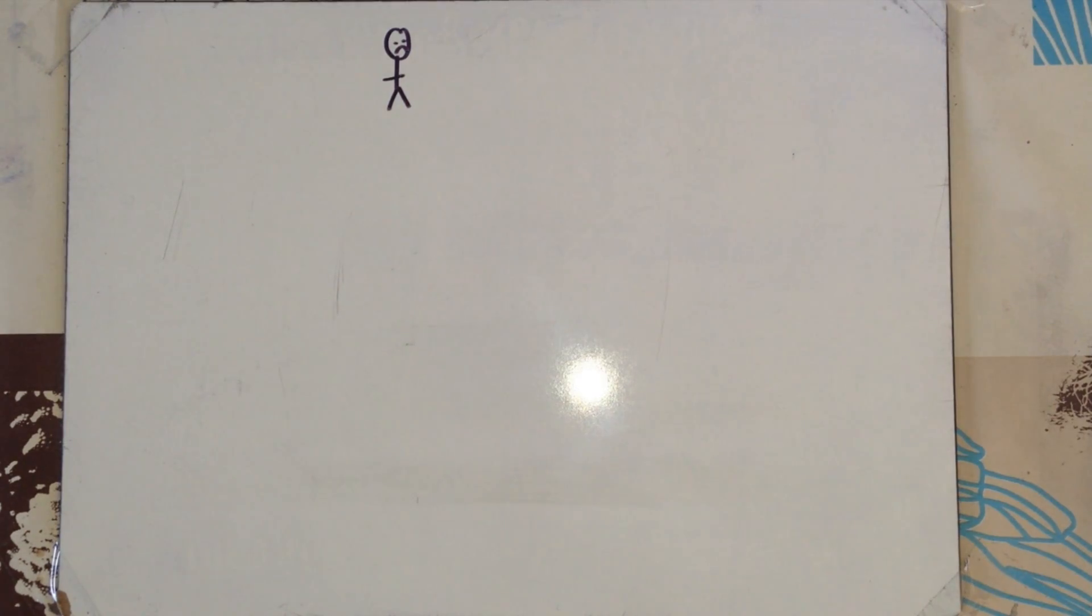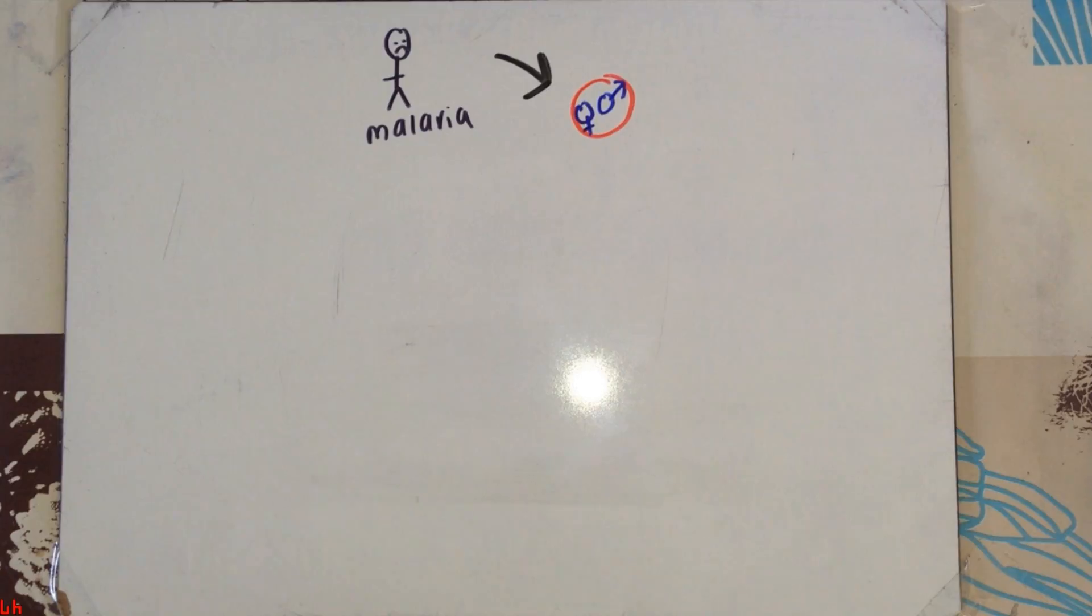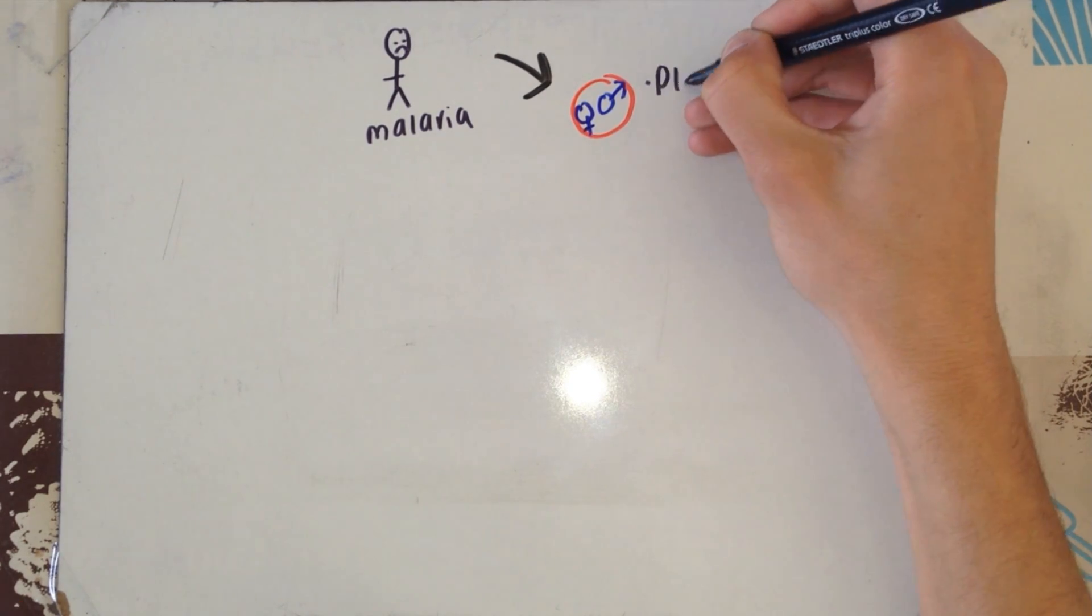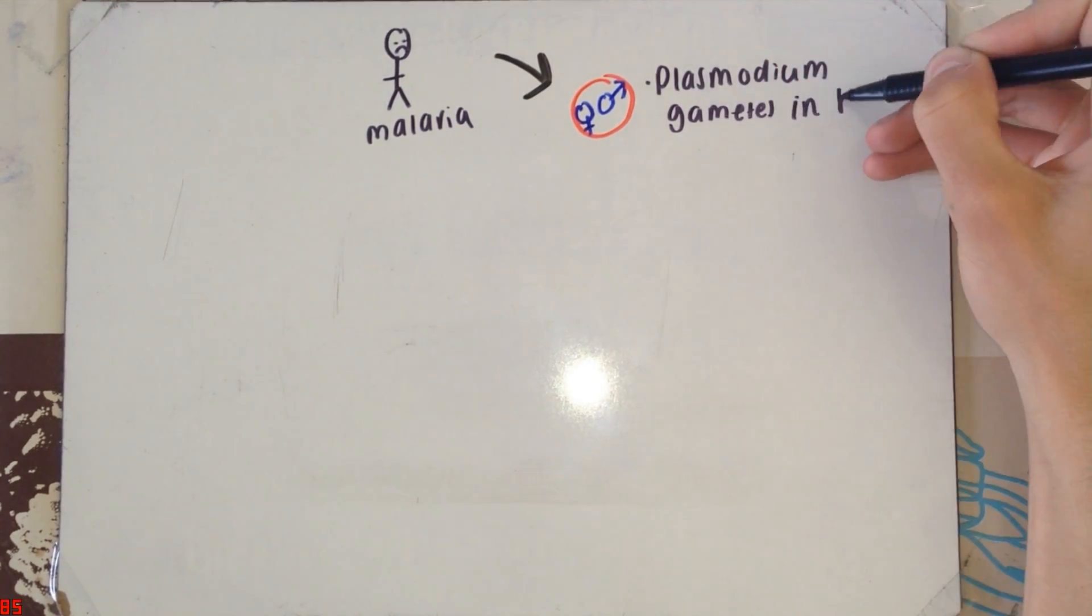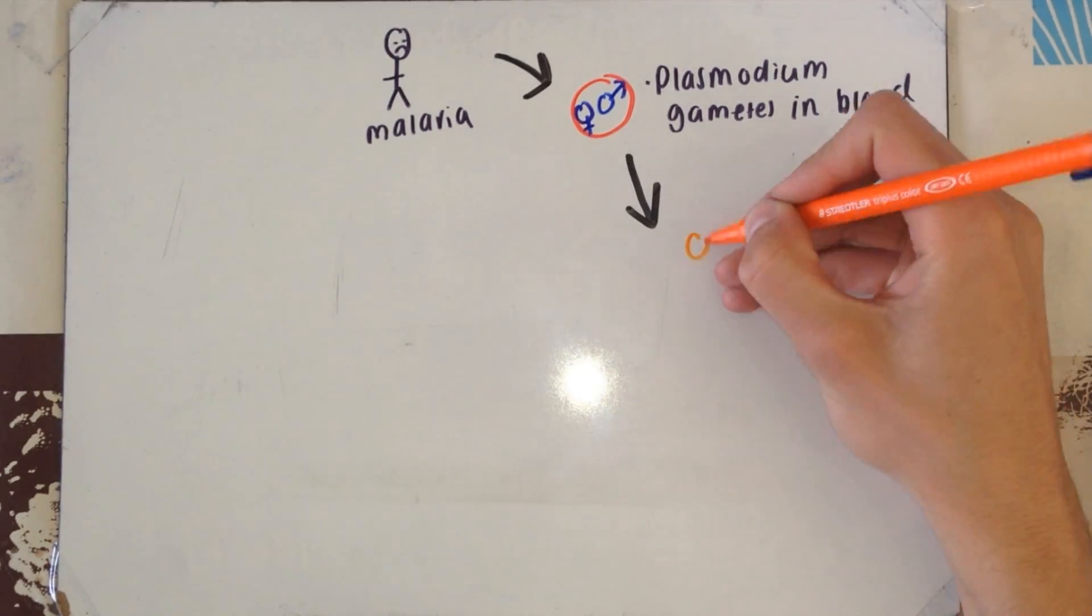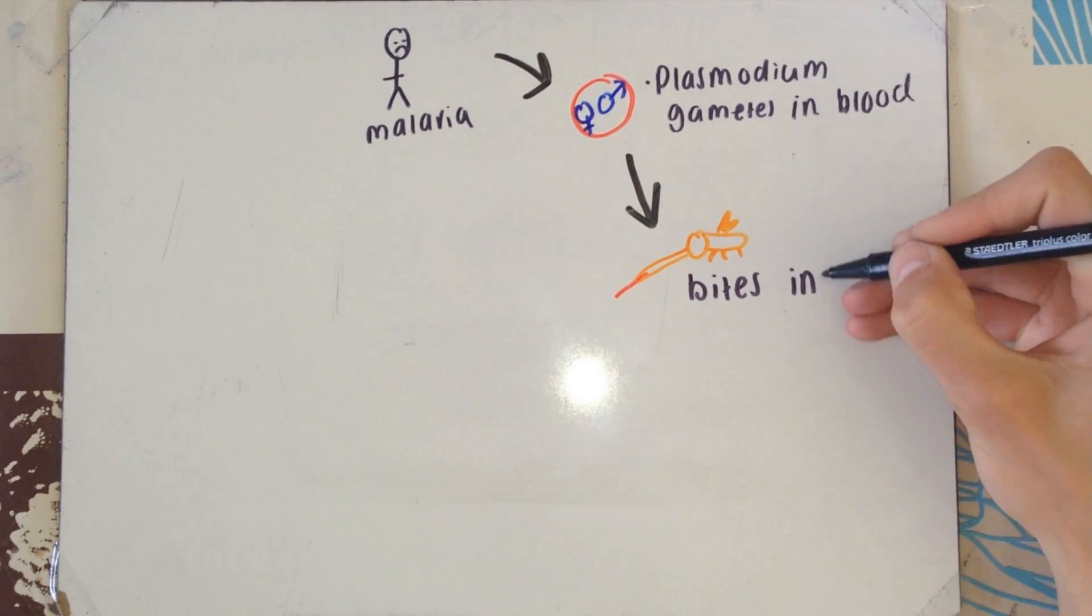And the last part of this video, the spread of malaria. This chap here isn't very happy. He has malaria. The plasmodium gametes are in this guy's red blood cells. The female Anopheles mosquito bites this guy and sucks his blood.